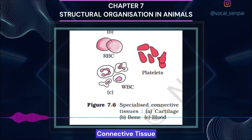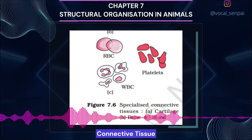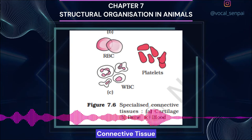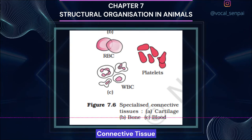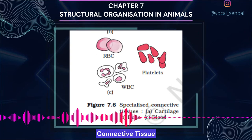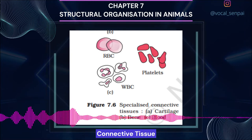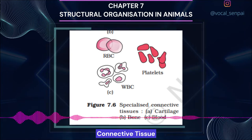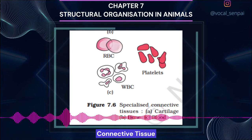Blood is a fluid connective tissue containing plasma, red blood cells (RBC), white blood cells (WBC) and platelets (figure 7.6c). It is the main circulating fluid that helps in the transport of various substances. You will learn more about blood in chapters 17 and 18.